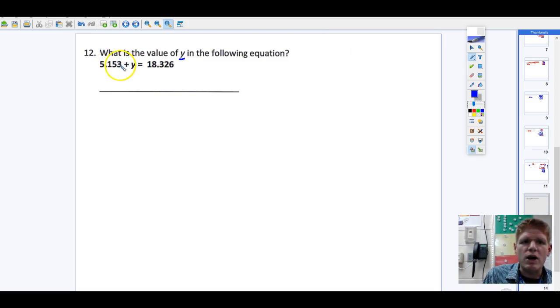Over here, I have y being added to 5.153, so that means I probably need to subtract 5.153 from this side. When I do that, that leaves me with just y.